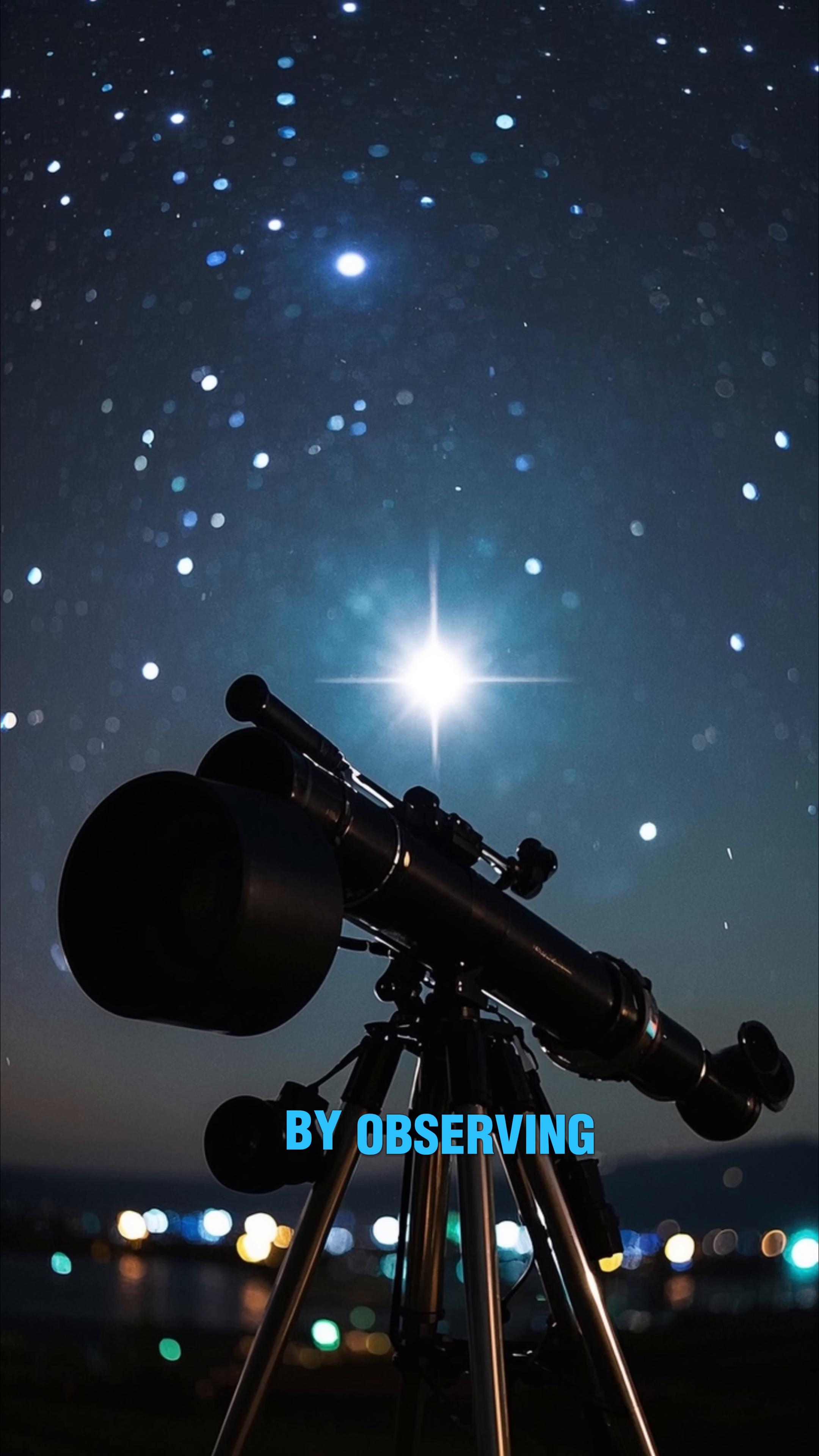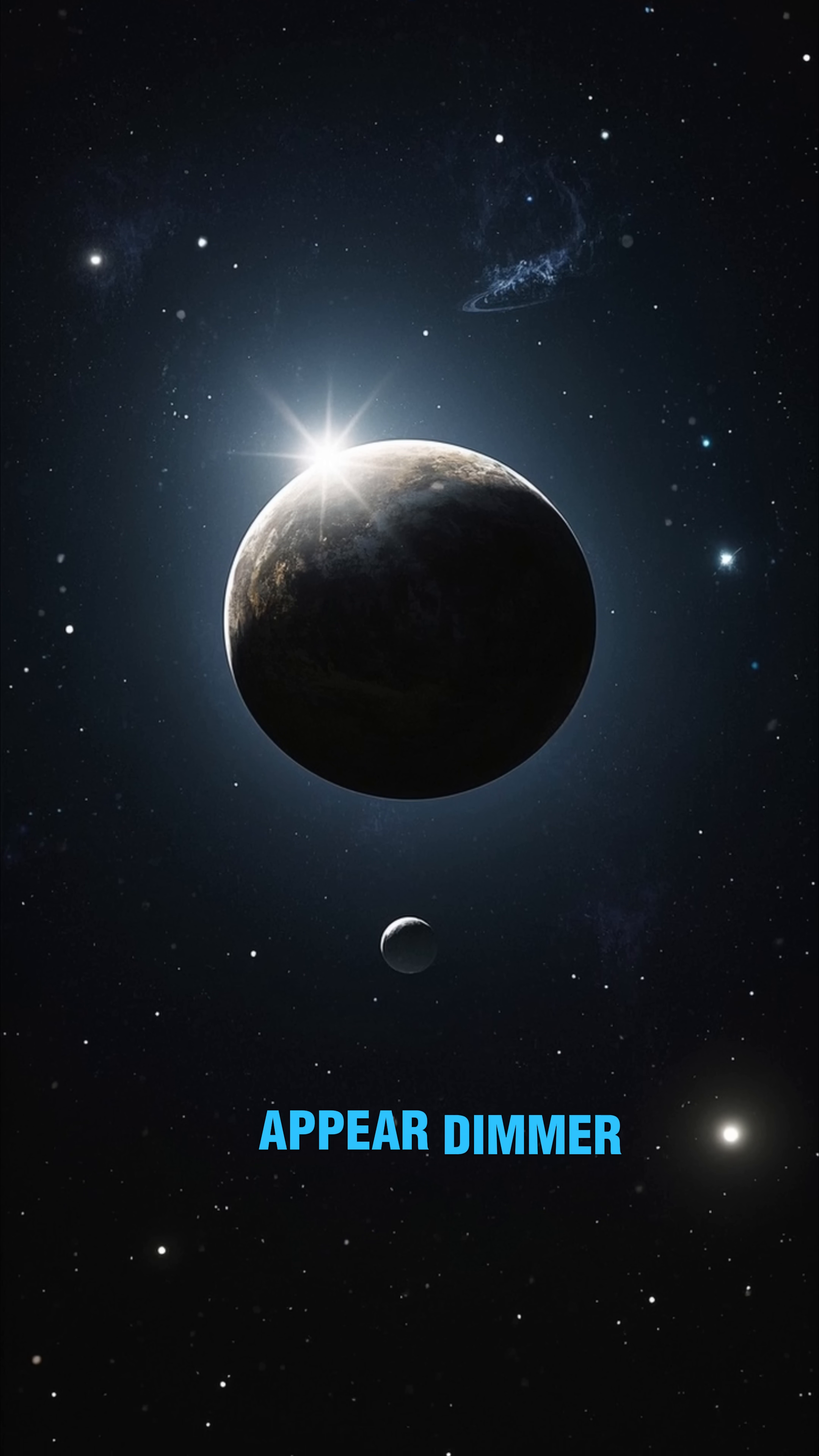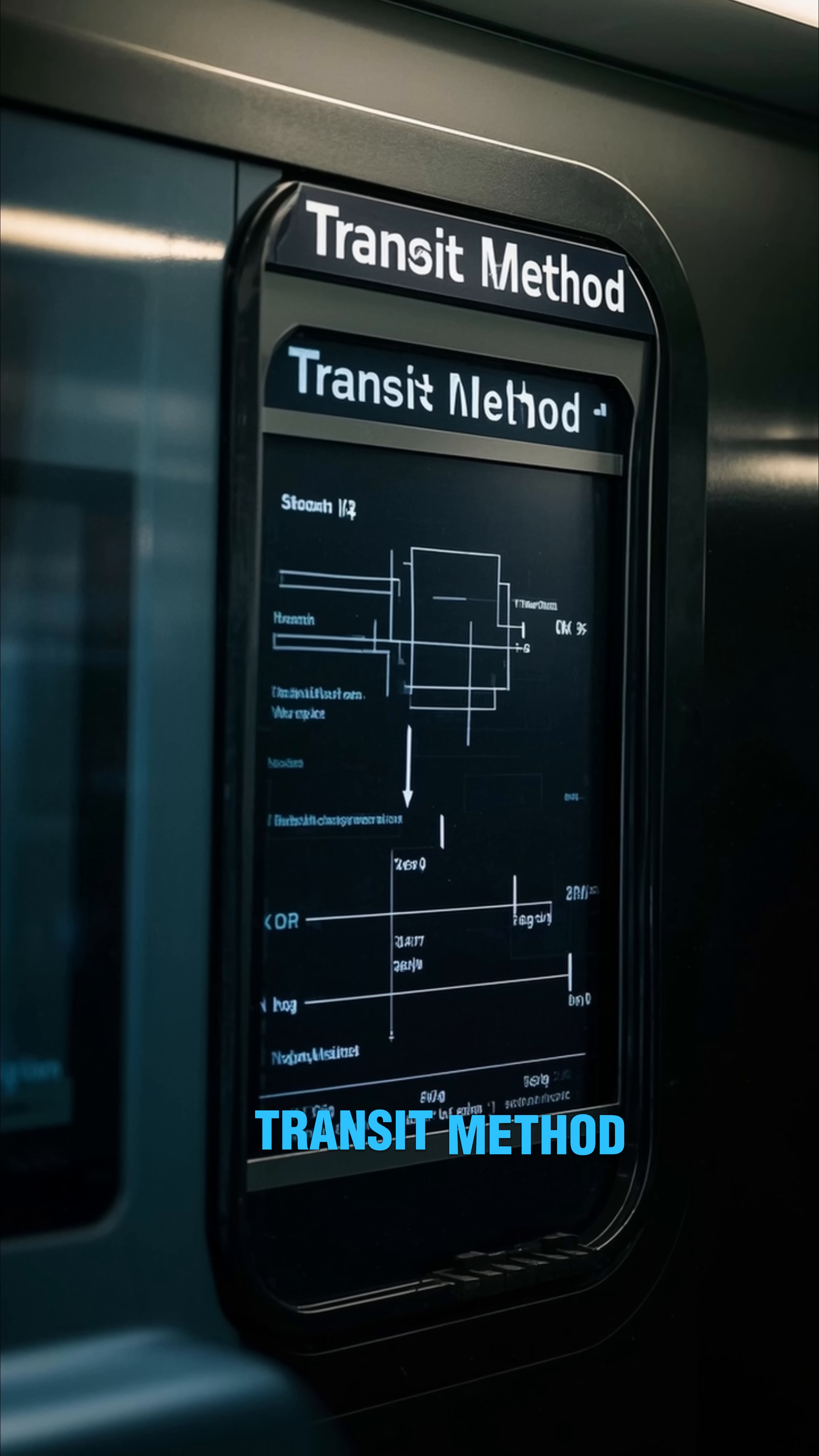The first way is by observing the light from distant stars and looking for dips in brightness. When a planet passes in front of its star, it blocks some of the light, which makes the star appear dimmer. By measuring the dip in brightness, we can work out how big the planet is and how far away it is from its star. This is called the transit method.